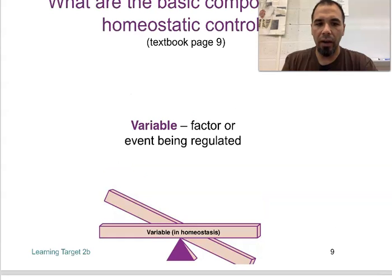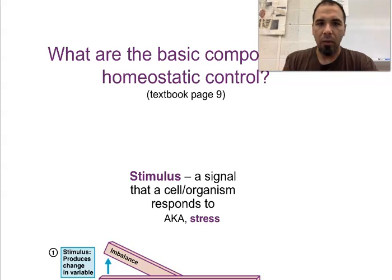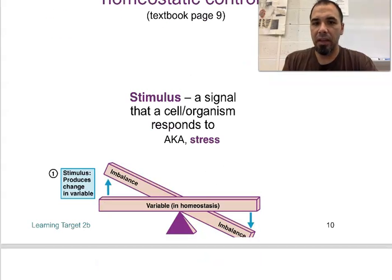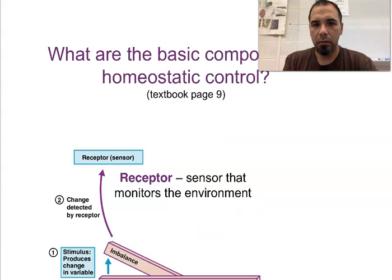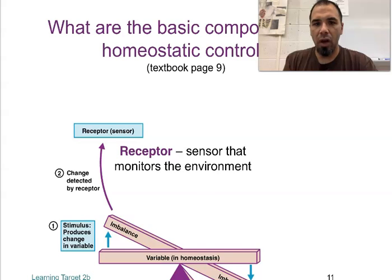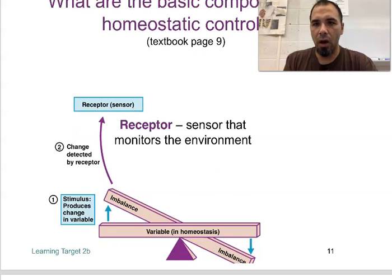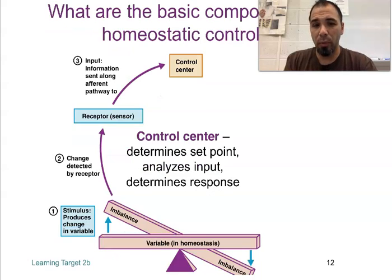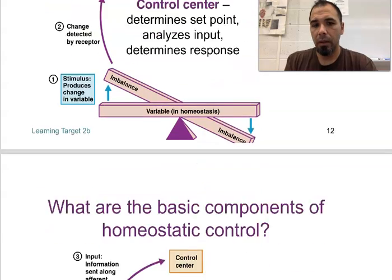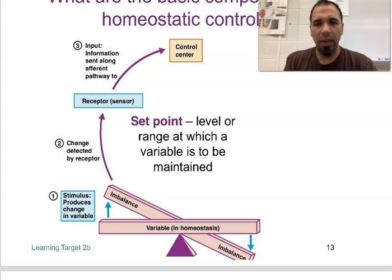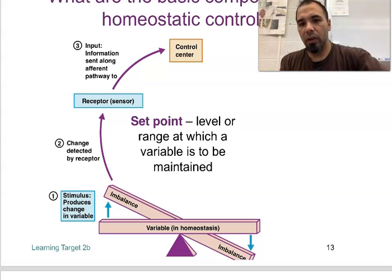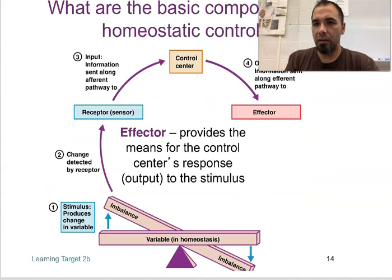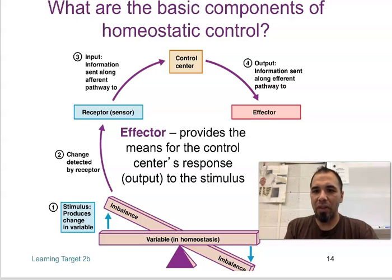You may want to draw these as we go. There is the variable — you can pause and draw. There's your stimulus signal — put in number one, pause and draw. Two — there's your receptor. Receptor senses and monitors the environment, pause and draw. Three — input information along an afferent, that's going towards the brain to your control center, pause and draw. Four — there's your control center. There's your set point — the range of which variables are maintained, pause and draw here at four. Output information sent along an efferent. Efferent means an effect — that's where we got effector, pause and draw.